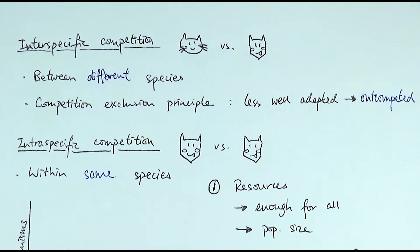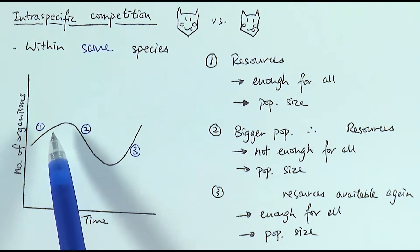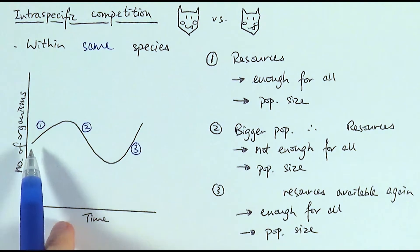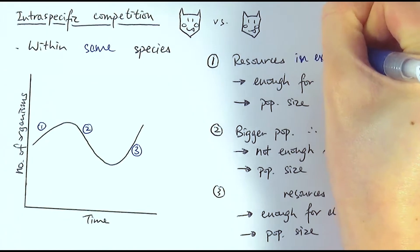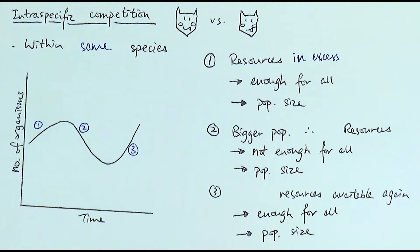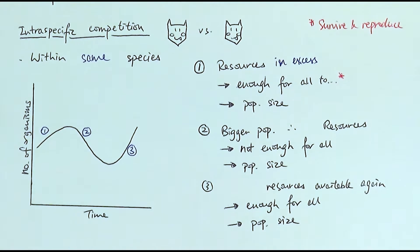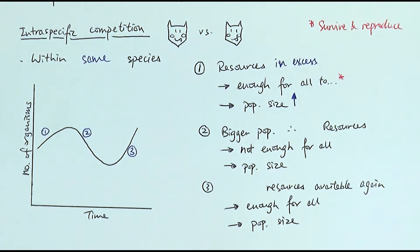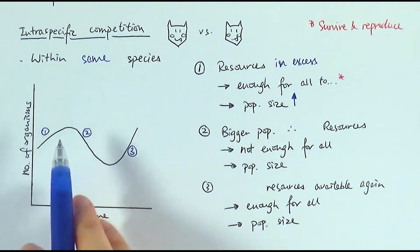Intraspecific competition can be shown on a graph, with time on the x-axis and number of organisms on the y-axis. In Stage 1, the resources are in excess — imagine a brand new environment with a lot available. There's enough for all to survive and reproduce, so the population size increases. At this point there is less intraspecific competition, and therefore the population grows.